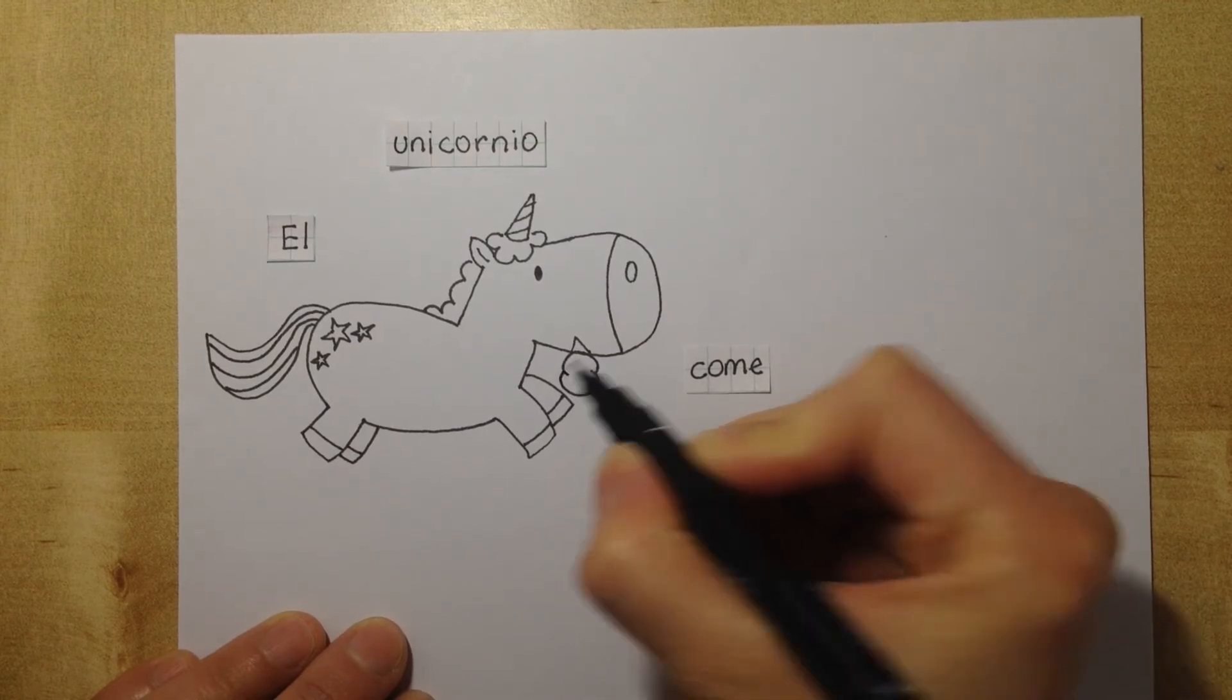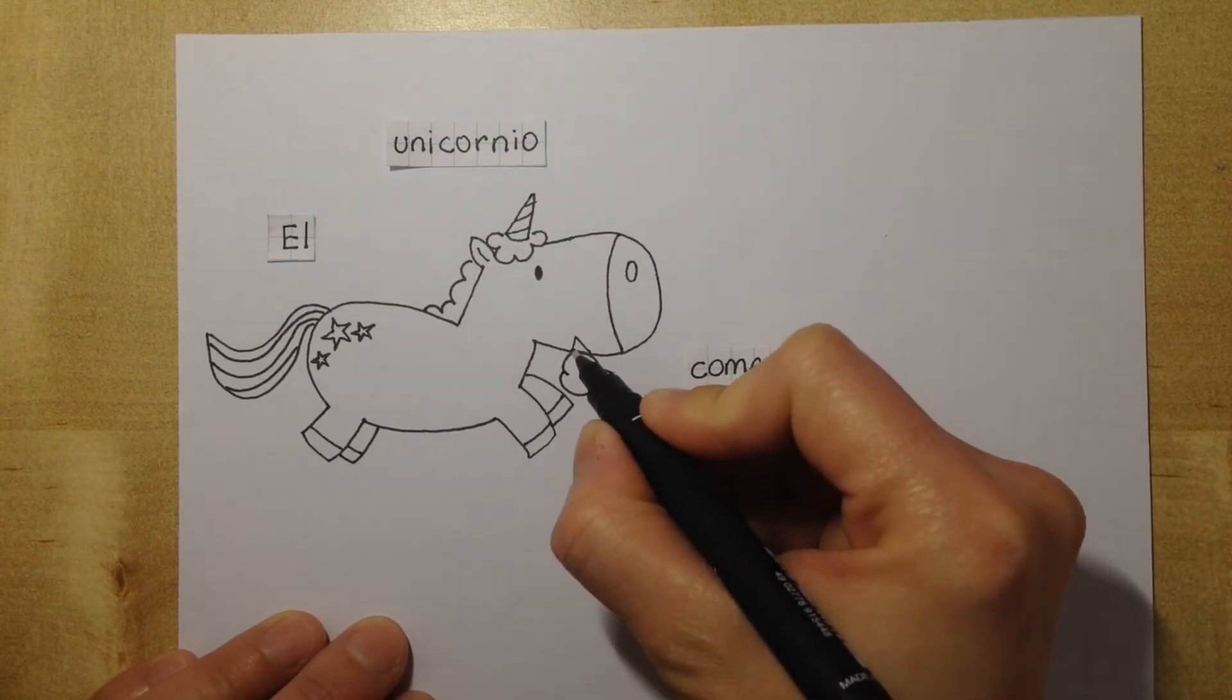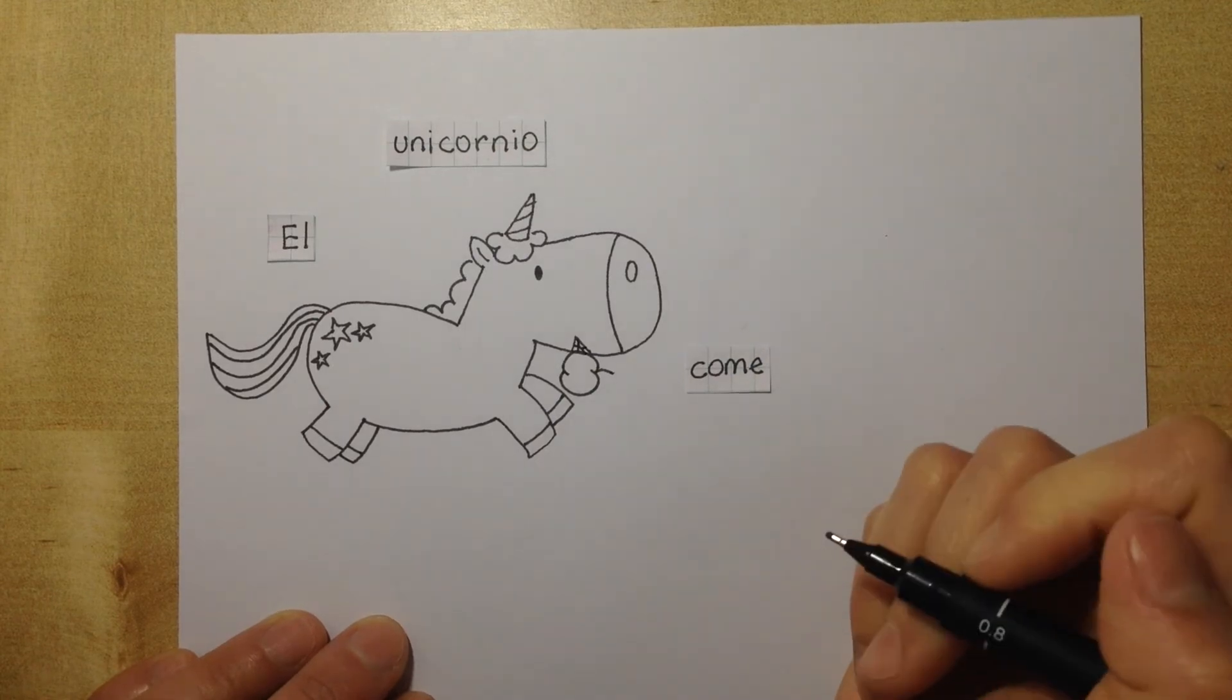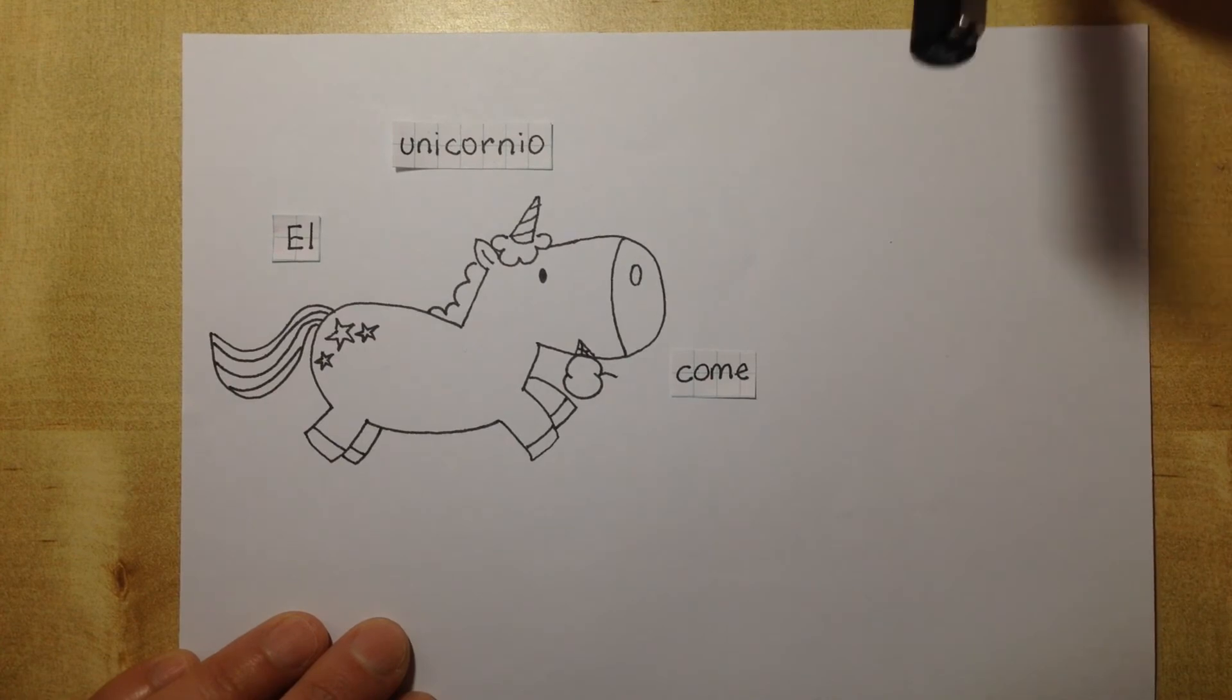El is masculine. Unicorn, unicornio, is masculine because finishing O. So, el unicornio. Come. Una.